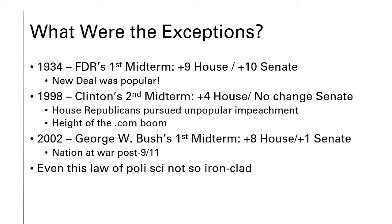Since the historical trend against the president's party in midterms is so strong, it's worth examining the handful of times it did not hold. The first instance was in 1934, the first midterm of FDR's presidency, when Democrats picked up nine seats in the House and 10 seats in the Senate, further cementing their majority. The New Deal agenda was quite popular, and even though the United States remained in the Great Depression, the public gave Roosevelt and the Democrats credit for taking aggressive action to deal with this generational challenge. It's not for nothing that FDR is generally rated as one of the top three presidents in U.S. history — he managed to keep the public with him through some unbelievably difficult times.